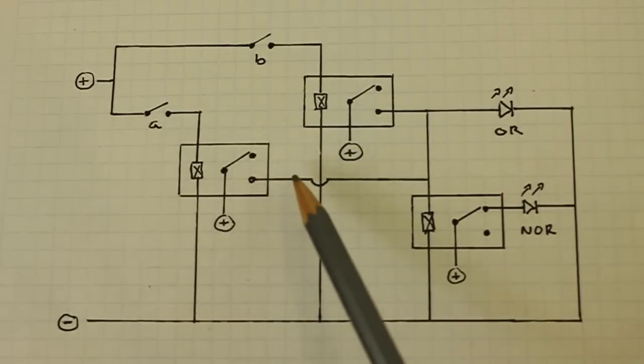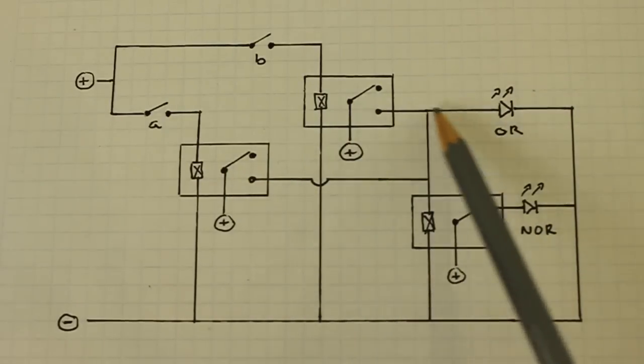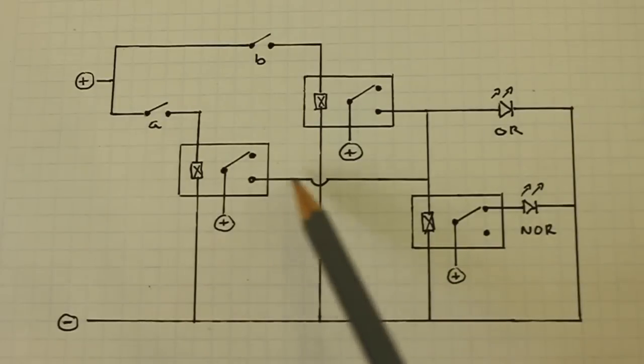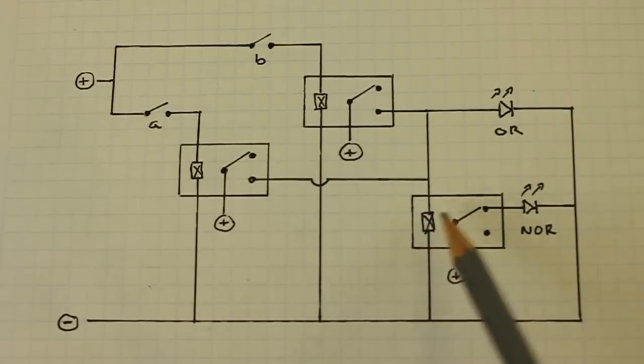Both relays are energized. The current flows to the OR LED through this path or through this other path and also the third relay is energized.